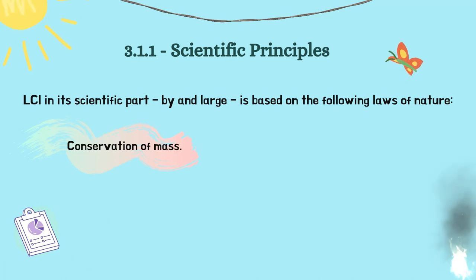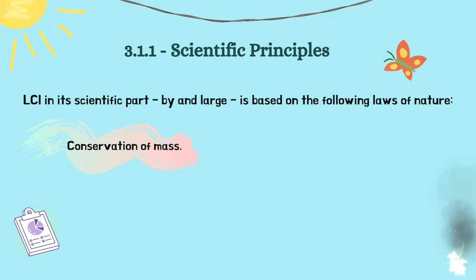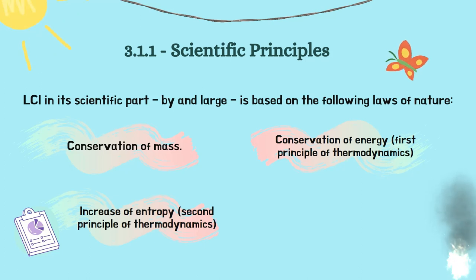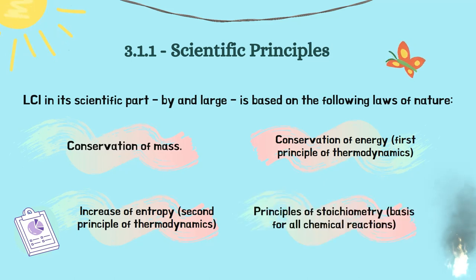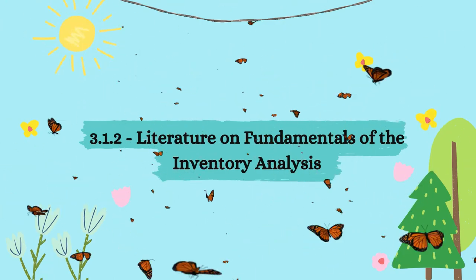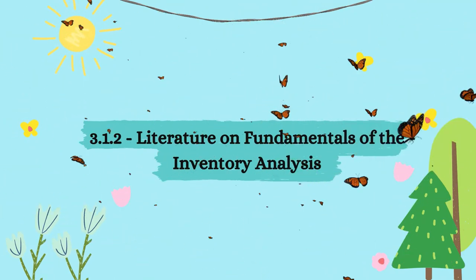LCI, or life cycle inventory, in its scientific part is largely based on the following laws of nature: the first one is the conservation of mass; the second one is the conservation of energy, which is the first principle of thermodynamics; the next one is the increase of entropy, which is the second principle of thermodynamics; and the last one is the principle of stoichiometry, which is the basis for all chemical reactions. Next, we will look at the literature on fundamentals of inventory analysis.